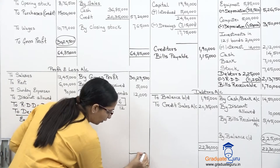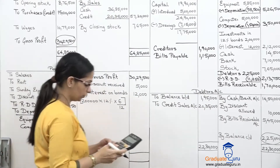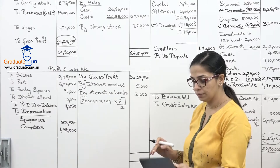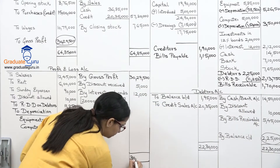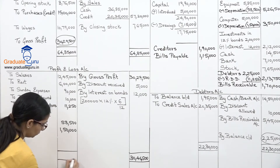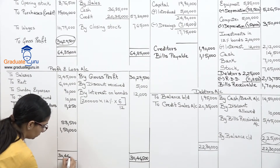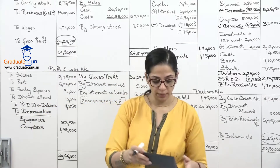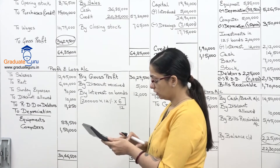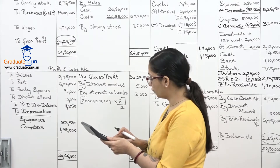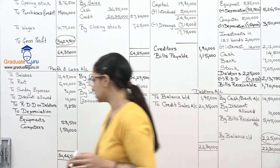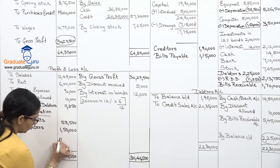Closing P&L: credit side — gross profit thirty lakh twenty nine thousand five hundred, plus discount received five thousand, plus interest on bonds twelve thousand equals thirty lakh forty six thousand five hundred. Debit side expenses: salaries twelve lakh forty five thousand, rent six lakhs, sundry expenses ninety thousand, discount allowed ten thousand, RDD eleven thousand two fifty, depreciation on equipment fifty eight thousand five hundred, depreciation on computers one lakh fifty thousand. Net profit is eight lakh eighty one thousand seven hundred fifty.